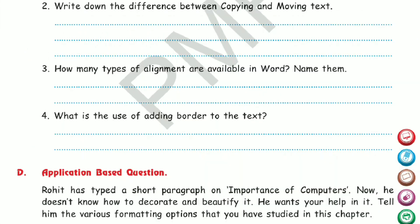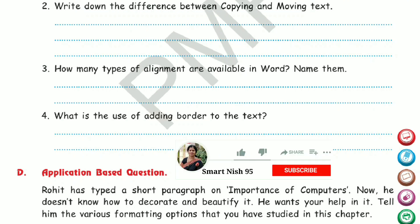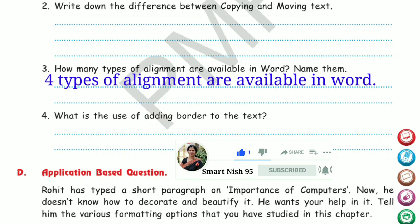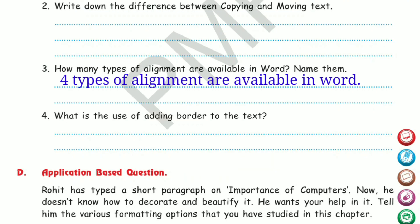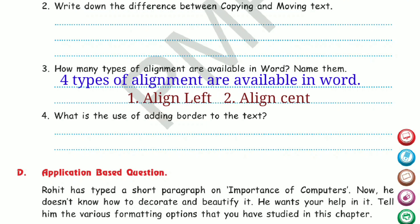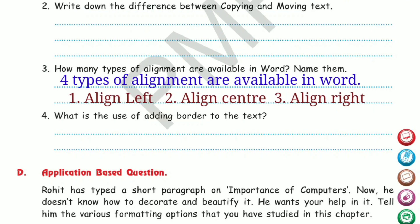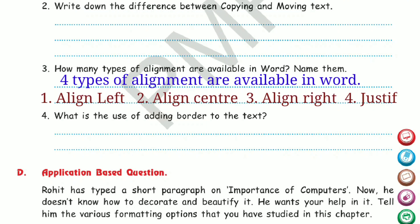Question 3. How many types of alignment are available in Word? Name them. There are 4 types of alignment: align left, align center, align right, and justify.